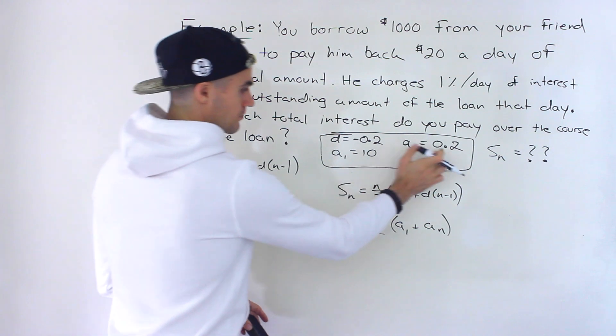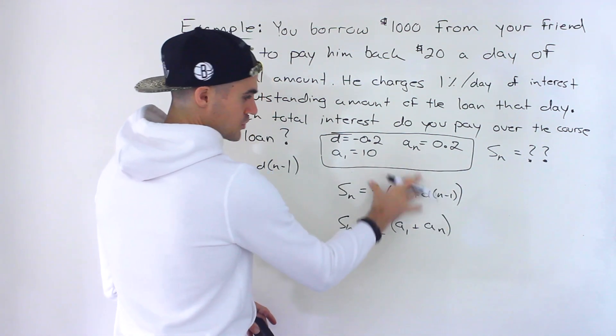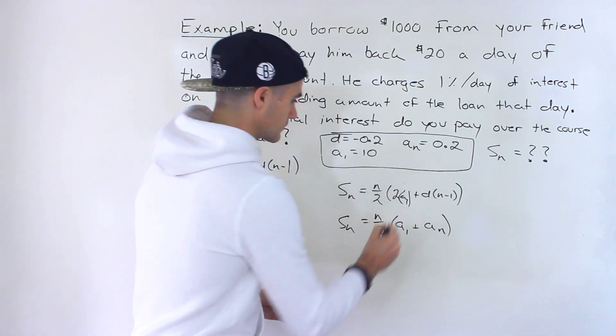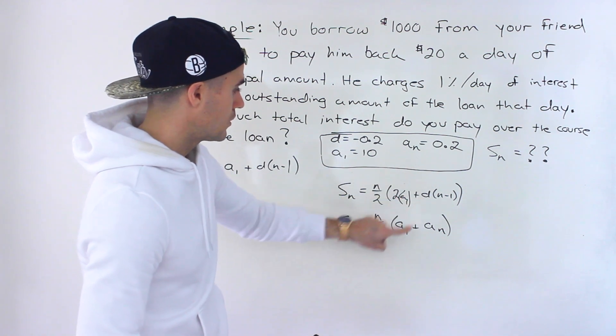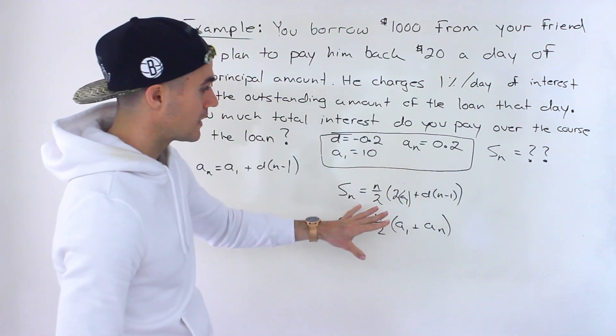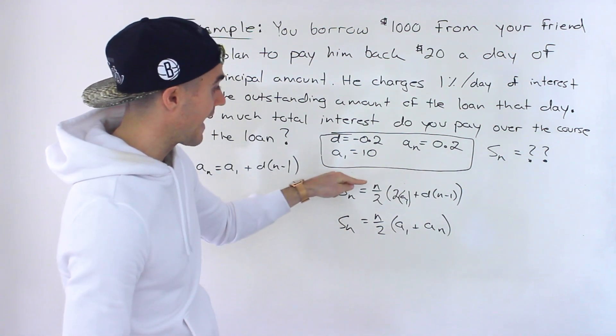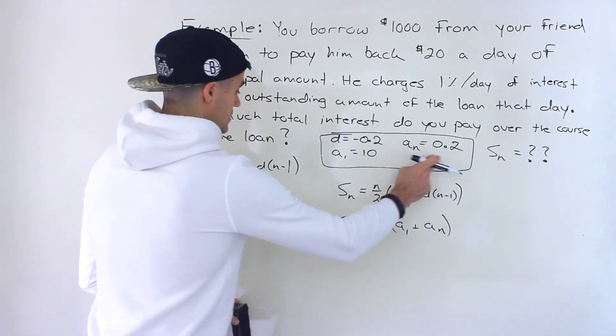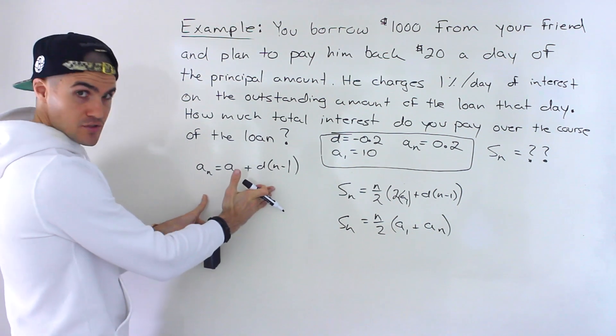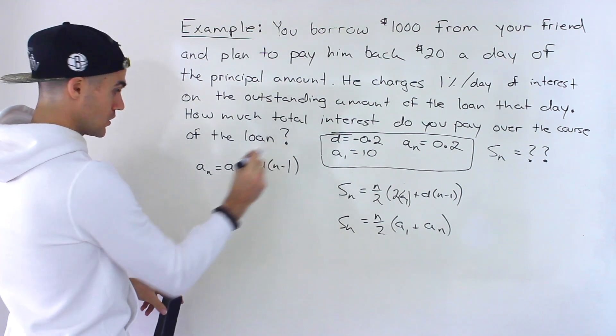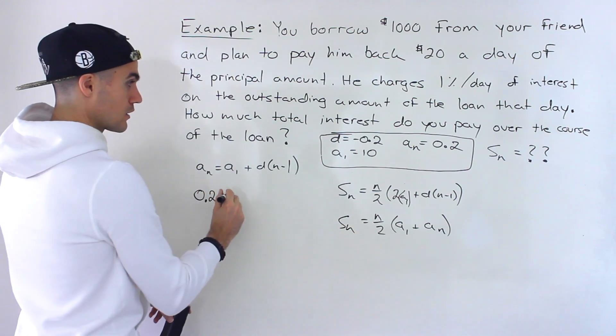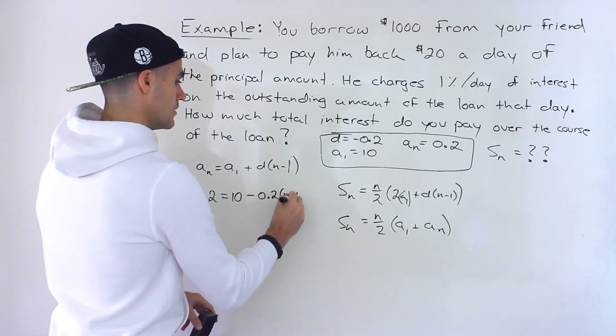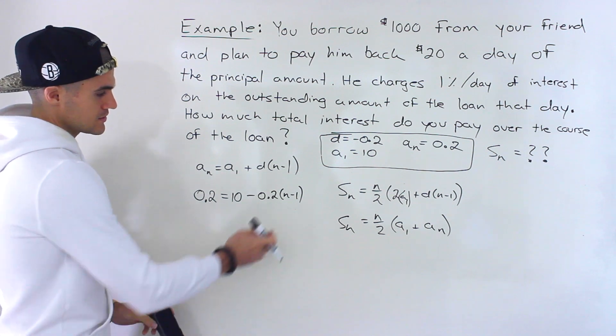And notice that we're actually given the first term and the last term. So we can actually use this, but whichever one we use, we know the first term. This is a₁ over here. We know the d value over here. We know the first term, we know the last term. So we can use either or, but in both of them, we don't know what the n value is. And we need the n value to plug it into either one. But we know what the last term is. So we can use this sequence formula to find what the n value is, because we know what the last term is, is 0.2. The first term is 10 minus 0.2(n-1). And then from here, to solve for this n value, we're going to bring the 10 over.